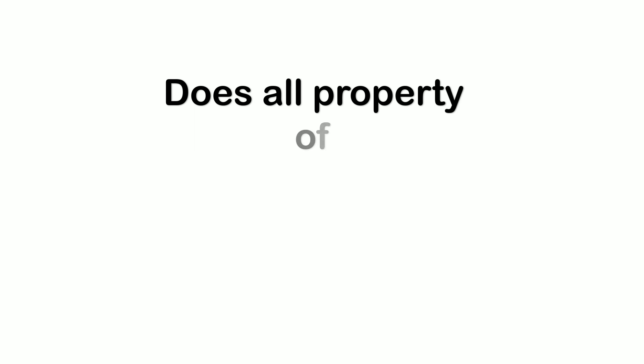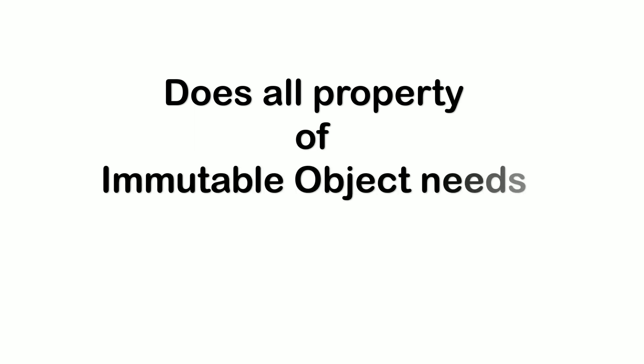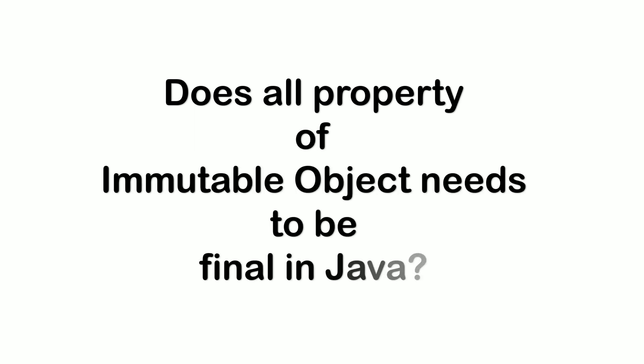The next question was: do all properties of an immutable object need to be final in Java? To be honest, it is not mandatory to have all properties as final when creating an immutable class. We just need to keep in mind that there are no setter methods provided explicitly to change the state of the object.